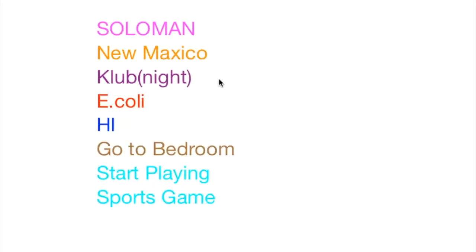Our story: the Arab guy whose name is Solomon, he travels to New Mexico. And the new thing he finds over there are nightclubs. The chick he meets in that club, her name is E. Kolai.